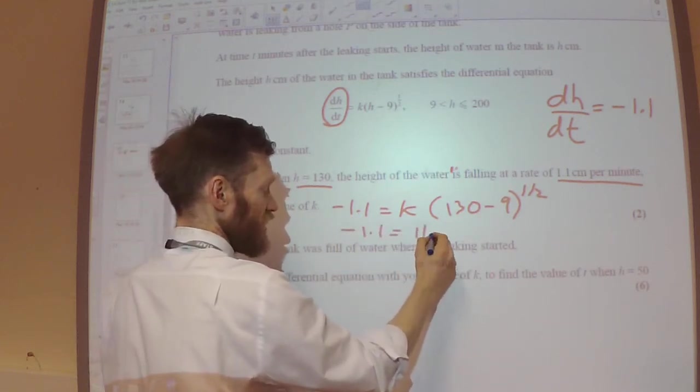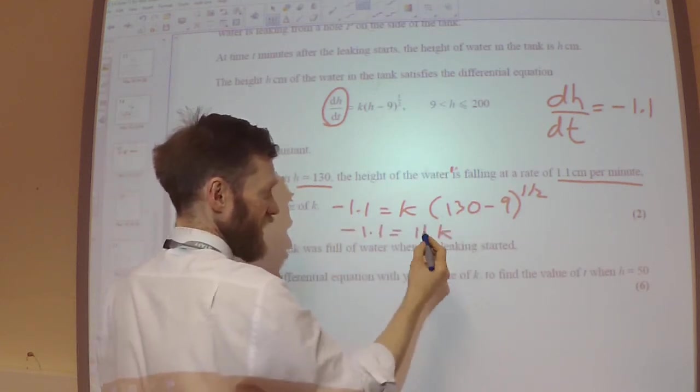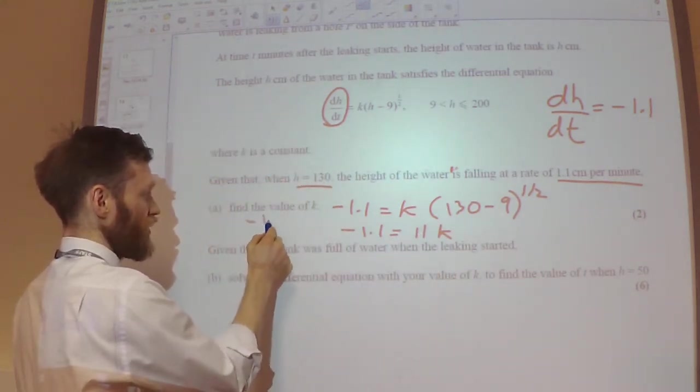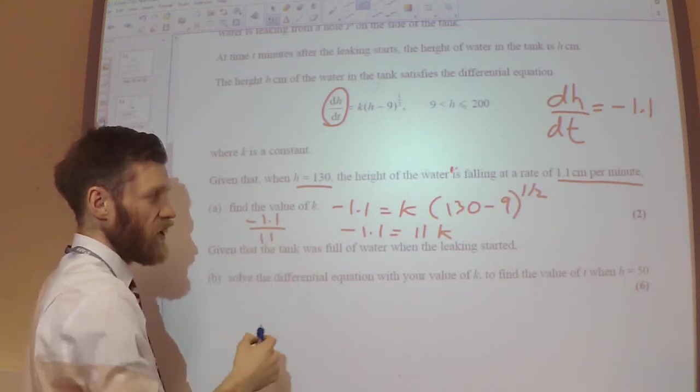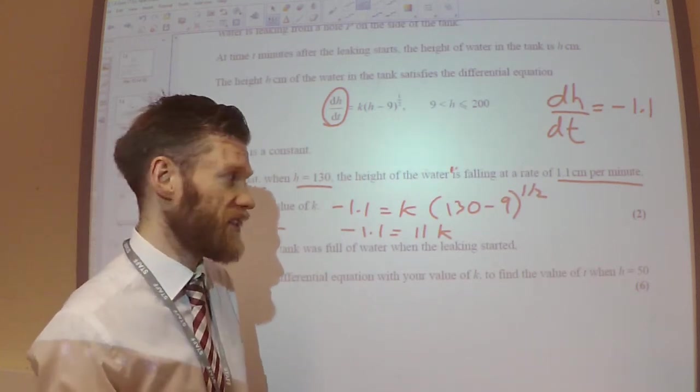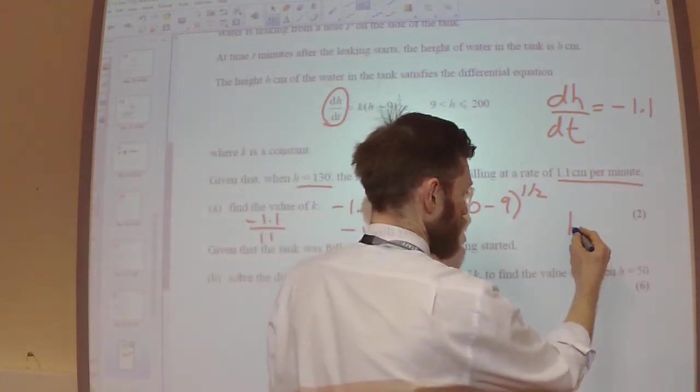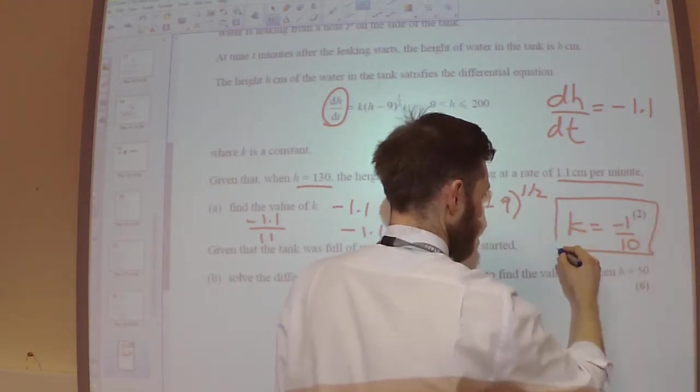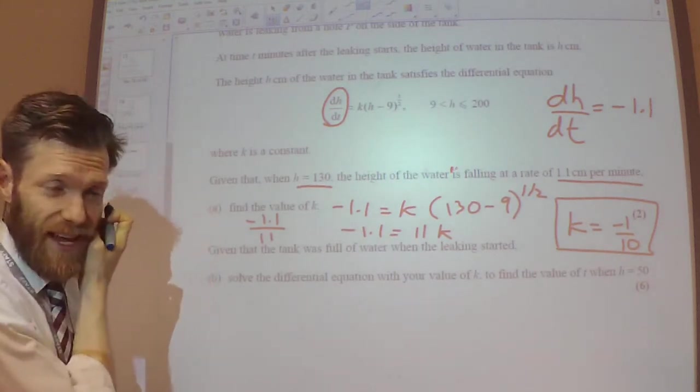So minus 1.1 equals 11 times K. So K is minus 1.1 divided by 11, which is minus 1 over 10. So that's part A.